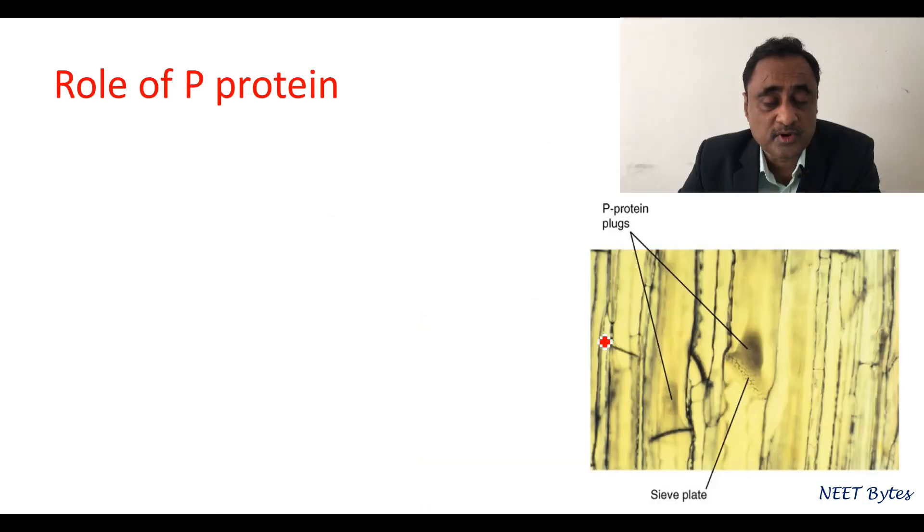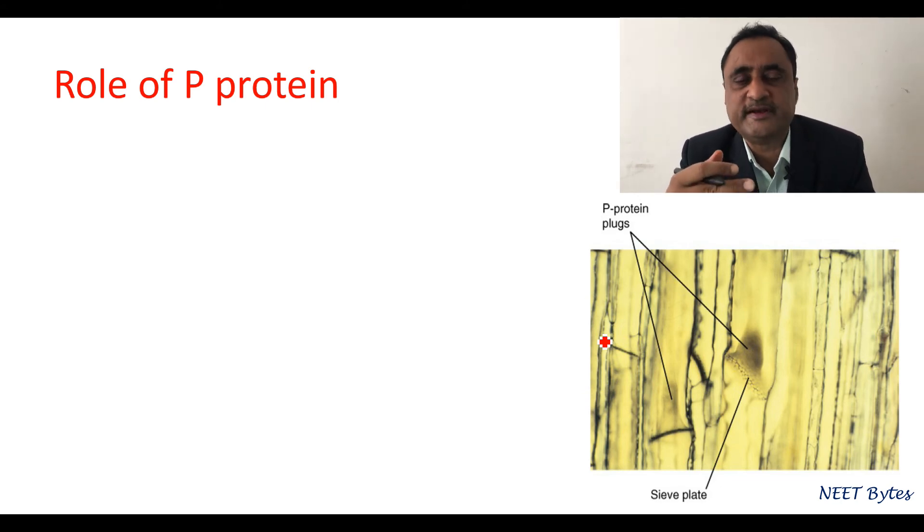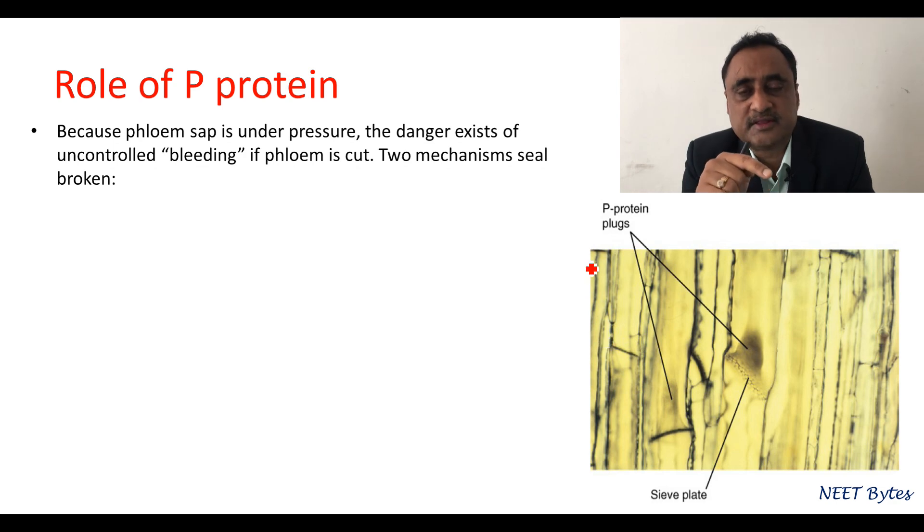Now let's talk about P-protein in translocation. As phloem is under pressure, there is every chance of excessive bleeding. You might have seen that when you cut the phloem, the phloem sap keeps oozing out. In order to check that loss, there is a substance called P-protein.